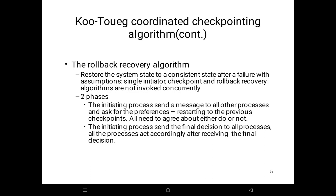The rollback recovery algorithm also consists of two phases. In phase one, the initiating process Pi sends a message to all other processes to check if they are willing to restart from the previous checkpoint. A process may reply no to the restart request for any reason. If Pi learns that all processes are willing to restart, Pi decides that all processes should roll back to the previous checkpoint; otherwise Pi aborts the rollback attempt and may attempt recovery at a later time. In phase two, Pi propagates the final decision to all processes, and on receiving the message from Pi all processes act accordingly.